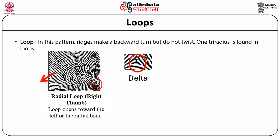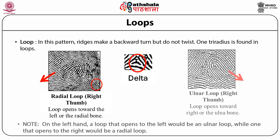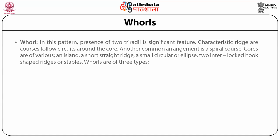There are two types of loops. Radial loops flow towards the radius bone of the hand, where the downward slope of the loop is from the direction of the little finger towards the thumb. Ulnar loops flow towards the ulnar bone of the hand, where the downward slope is from the direction of the thumb towards the little finger. In whorl patterns, the presence of two triradii is a significant feature. Characteristic ridge courses follow circuits around the core, and another common arrangement is a spiral course. Cores are of various forms: an island, a straight ridge, a small circular or ellipse, or two interlocked hook-shaped ridges or staples.